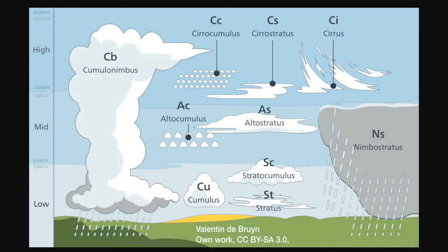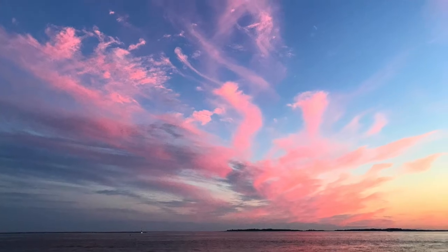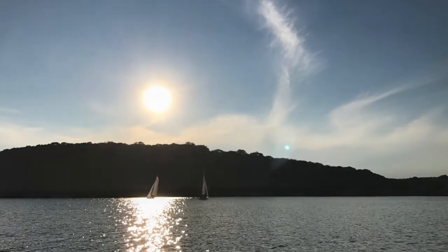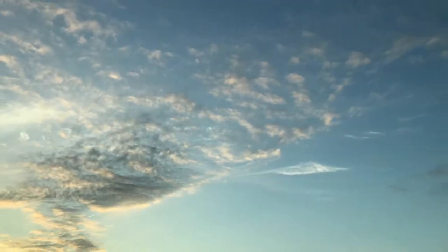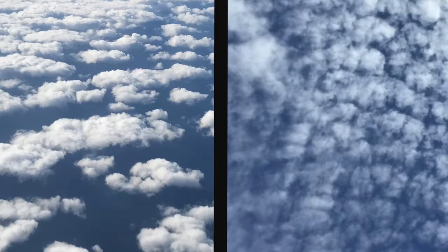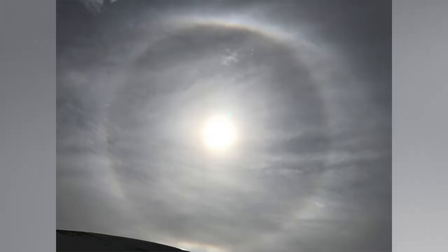Clouds form at different sections in the atmosphere — there are high-level clouds, middle-level clouds, and low-level clouds. At the highest level, there are three kinds: cirrus clouds, which are high altitude, thin, and wispy-looking cloud streaks made of ice crystals; cirrocumulus, which are small, flaky, and white high-altitude cumulus patches; and cirrostratus, which are thin, transparent, high-altitude layers capable of producing a halo. If you've ever looked up in the sky and seen a ring around the sun, that's a cirrostratus cloud.